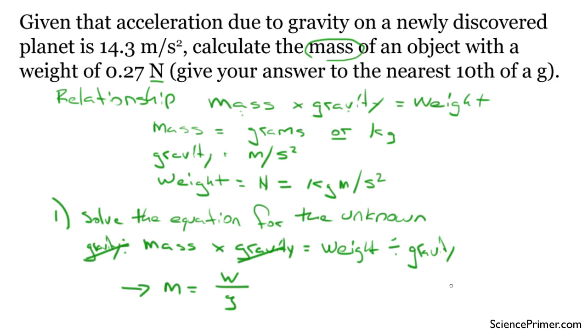So this is the equation we're going to solve. These are the units we're going to use. Now let's figure out what we do and don't know in this problem. So we will list the parameters: mass, gravity, and weight. Mass is the unknown, so we'll call that X. Gravity is 14.3 meters per second squared. And weight is 0.27. In this case, we'll go ahead and use kilograms meters per second squared because that's what we're going to need to be working on.